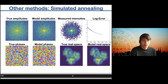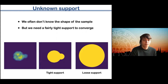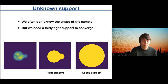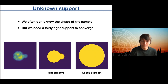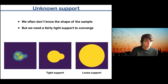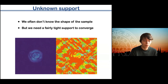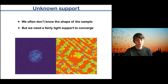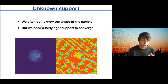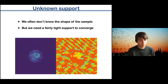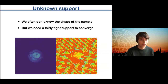What if we don't know the support? Often we don't, and it turns out that if the support is not tight — if it's a bit bigger than the object — we often can't recover the object well. These algorithms are quite sensitive to the support being tight. Running the algorithm with a much looser support shows that even given a lot of time it never converges to a good solution, though it does start to hint at the shape of the object. There's simply too much freedom.